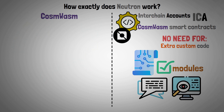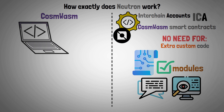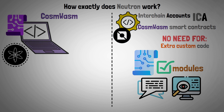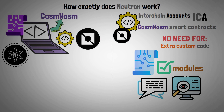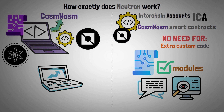CosmWASM: A platform for smart contracts designed especially for the Cosmos ecosystem is called CosmWASM. Its integration with Neutron improves the network's flexibility and smoothness of operation.